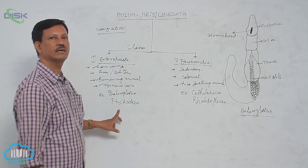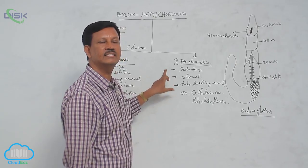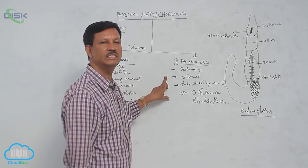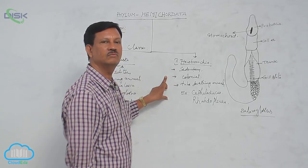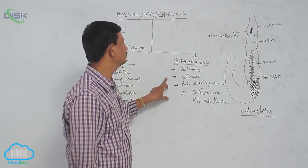Next is Pterobranchia. These are sedentary animals. They are not free-swimming. They are found in marine water, where, just like plants, they are attached to the substratum.